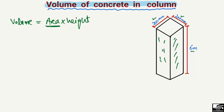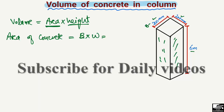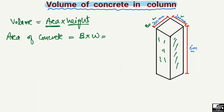The area of concrete in the column is equal to the length — or we can say breadth — multiplied by the width of the column. So the breadth is 200 millimeters and the width is also 200 millimeters, since it's a square type of column.